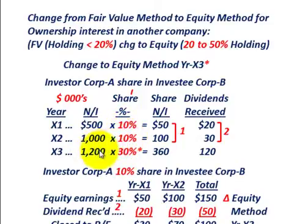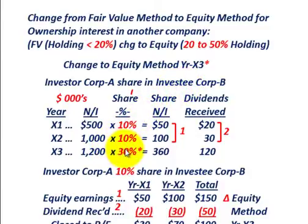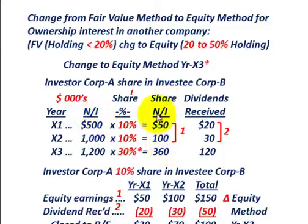Then in year X3, they're going to change from a 10% ownership interest up to 30%. Their first investment was $1 million in corporation B. Then in the next investment, they increased to 30% by purchasing an extra $3 million worth of corporation B. We have to determine the share of net income that investor corporation A would be receiving from investee corporation B, and also the dividends received.